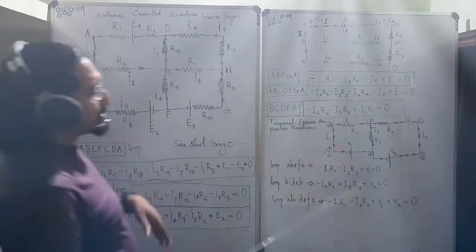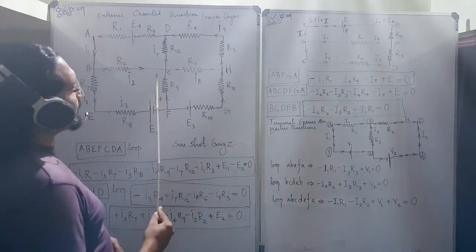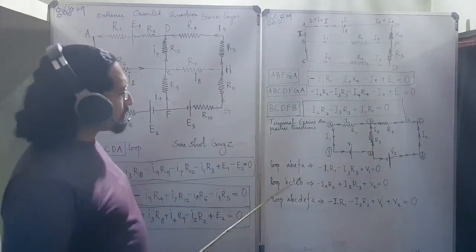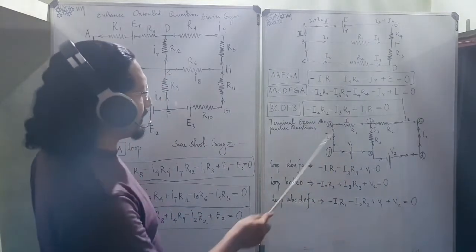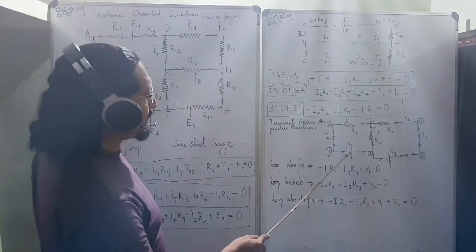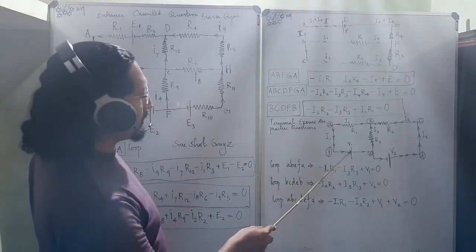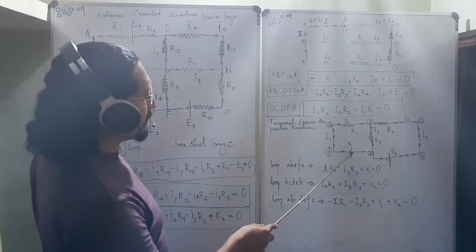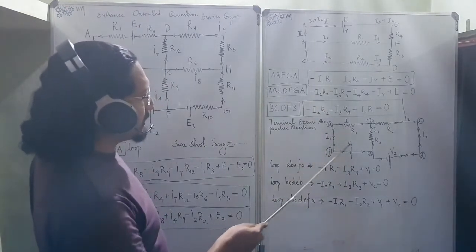The terminal examination practice questions will look like somewhat simpler than these two things. So, loop A-B-E-F-A. This small thing. That means a cell is there. Write the cell V1 over here. This is against this thing. It is positive to negative things. So, minus I1*R1. Then comes...